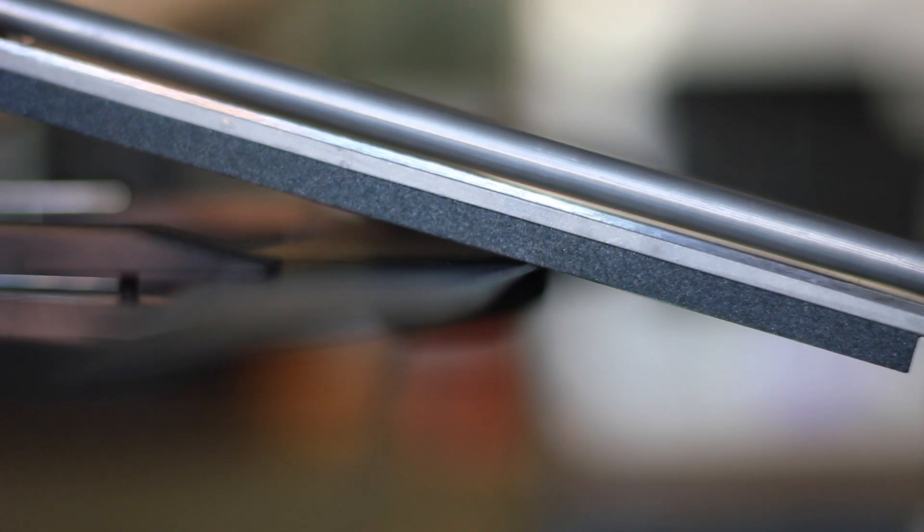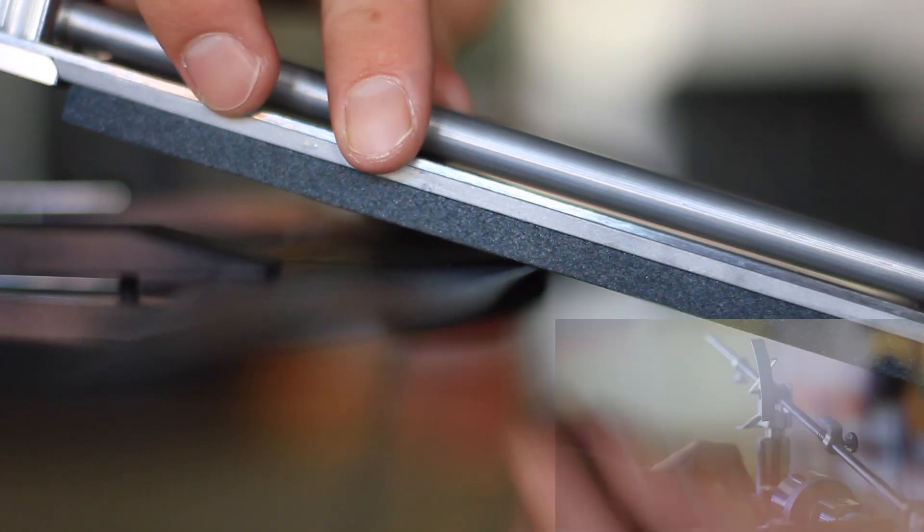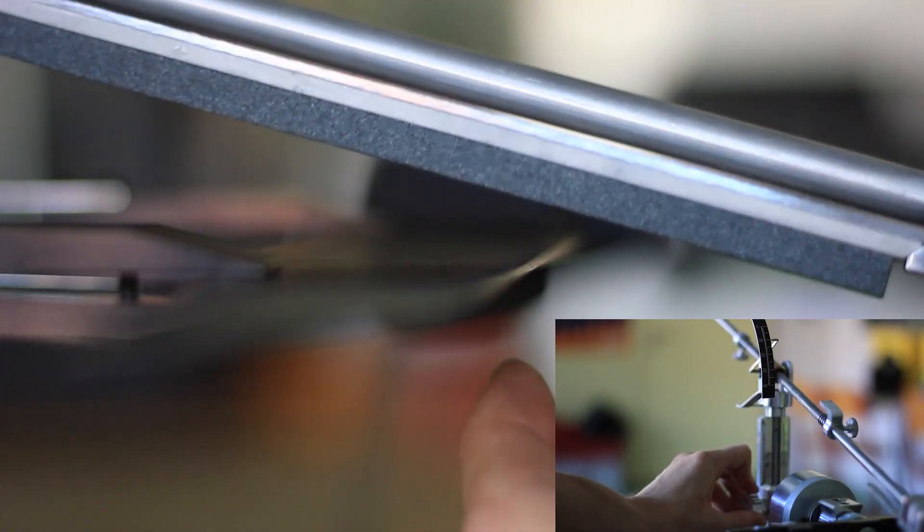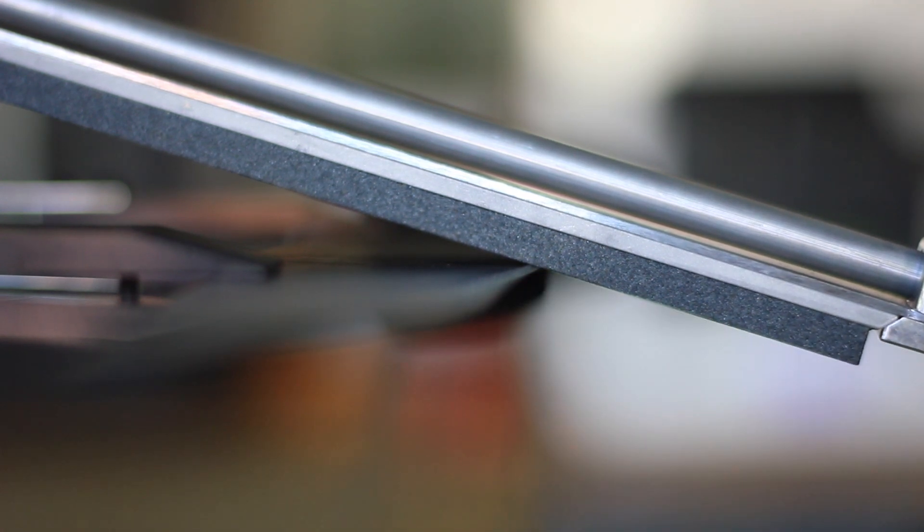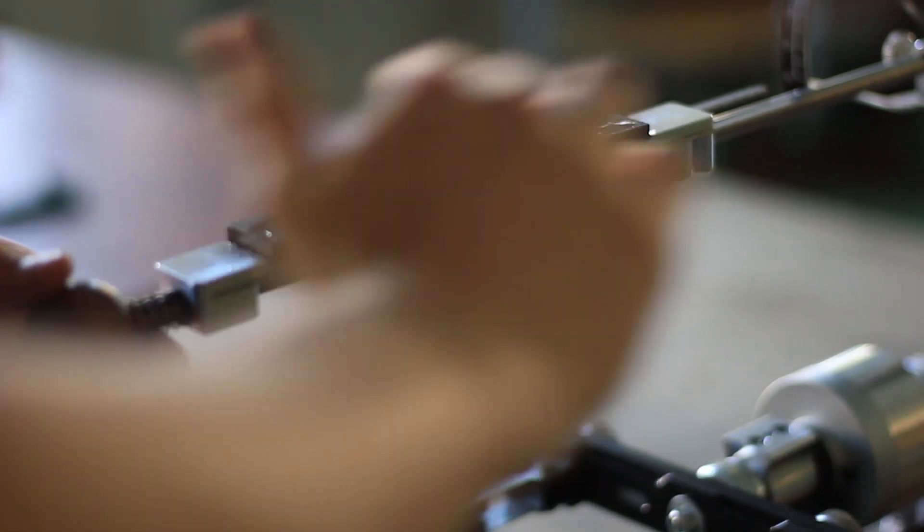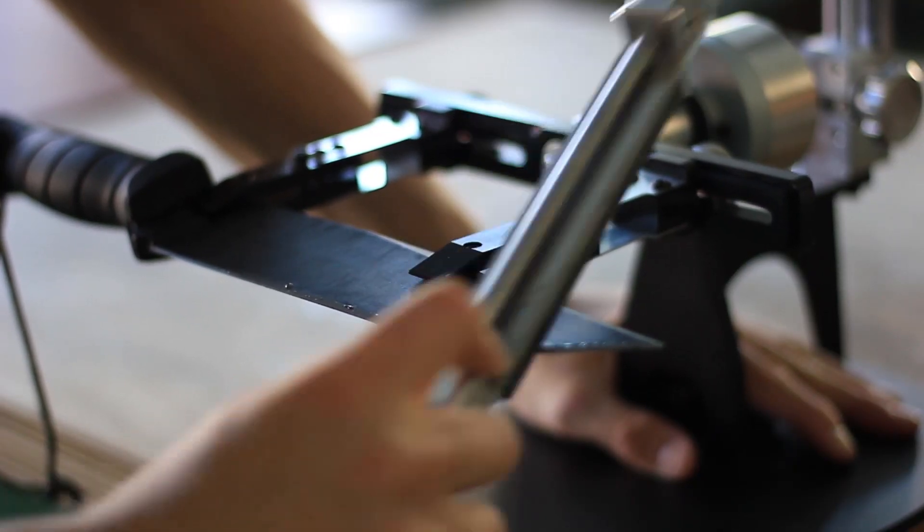This third update of their original sharpener features an all new height adjustment system. By the turn of a knob, you can easily set the angle you want to sharpen at. Now, before I start grinding, I like to get the stones really wet again. This helps to form that perfect grinding slurry.